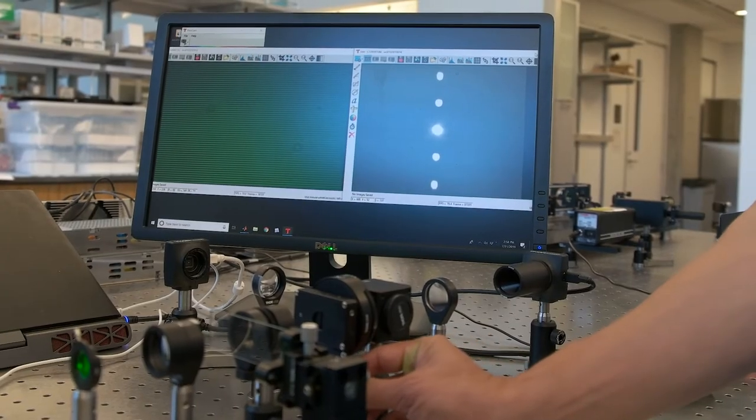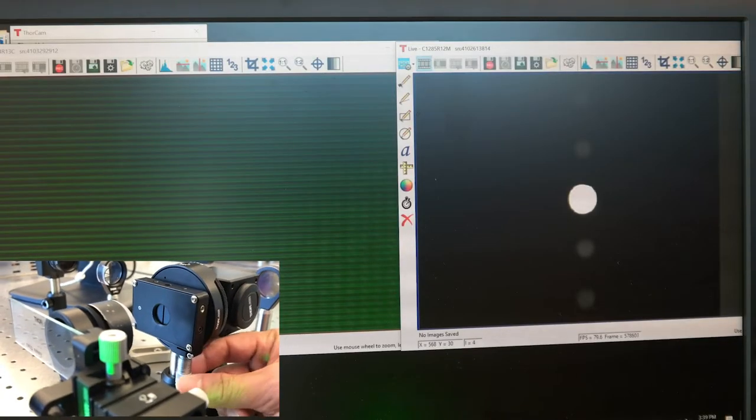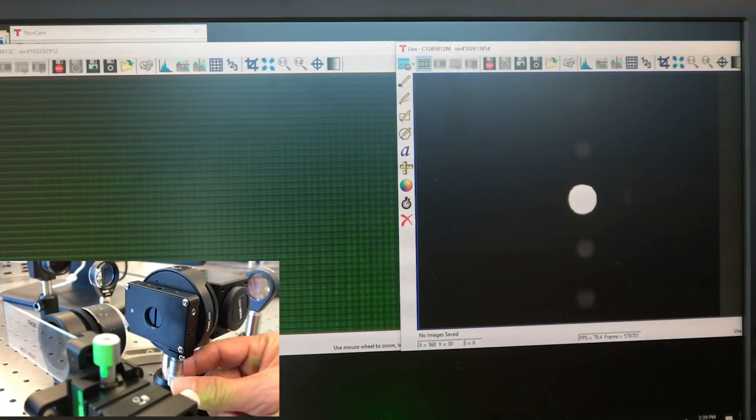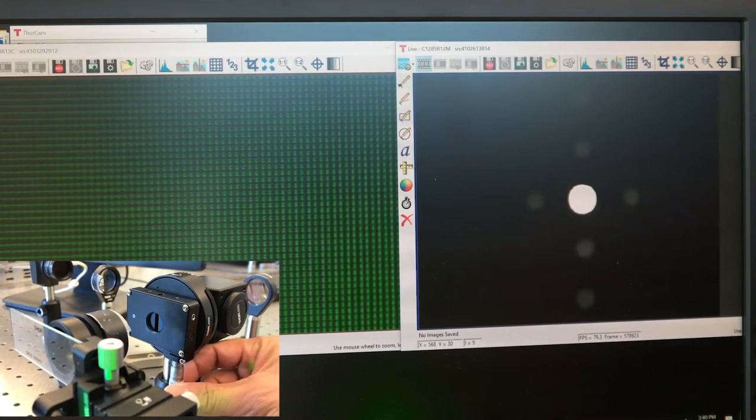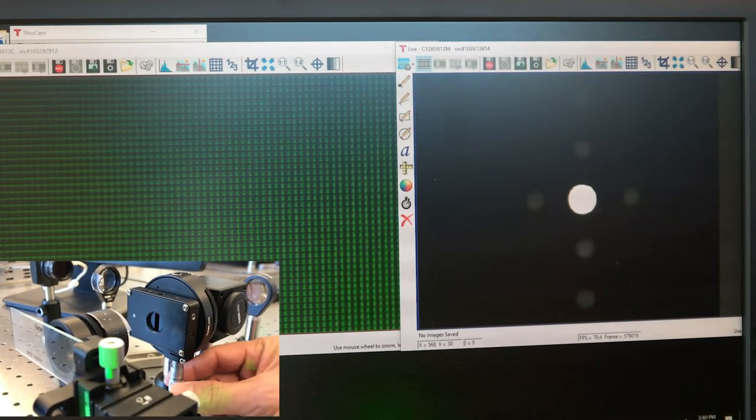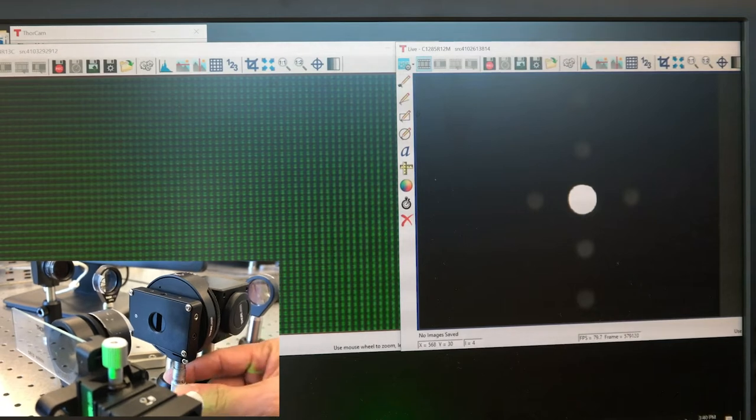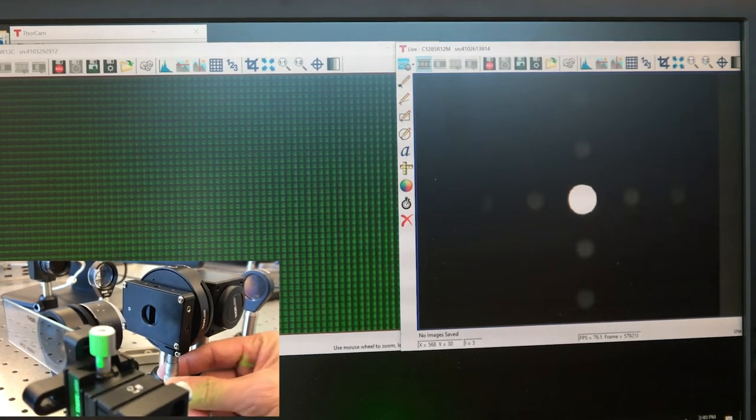If I gradually open the slits and allow the high-frequency components to make it to the camera, we can see the vertical lines gradually appear again.